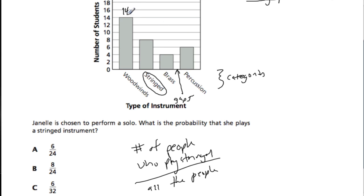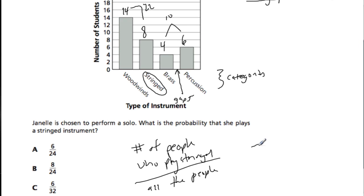I'm going to write the numbers above each bar to get a sense of how many people are in each group. 6 and 4 is 10, 14 and 18 is 22, so there are 32 people total, and we know our denominator is going to be 32.